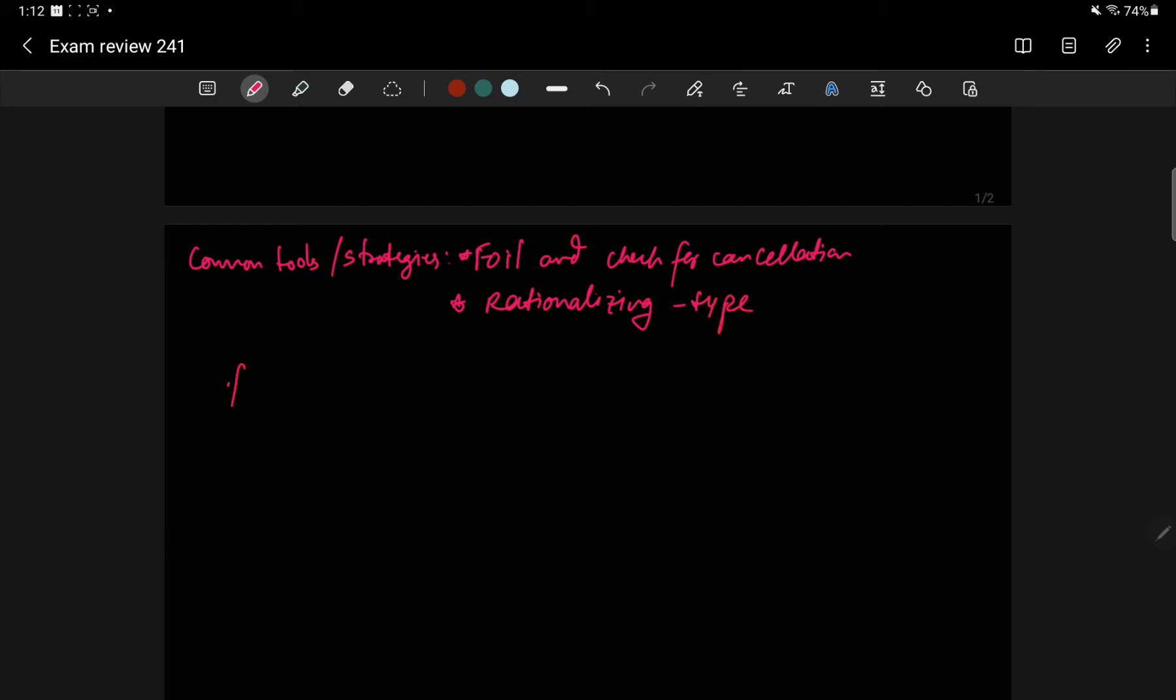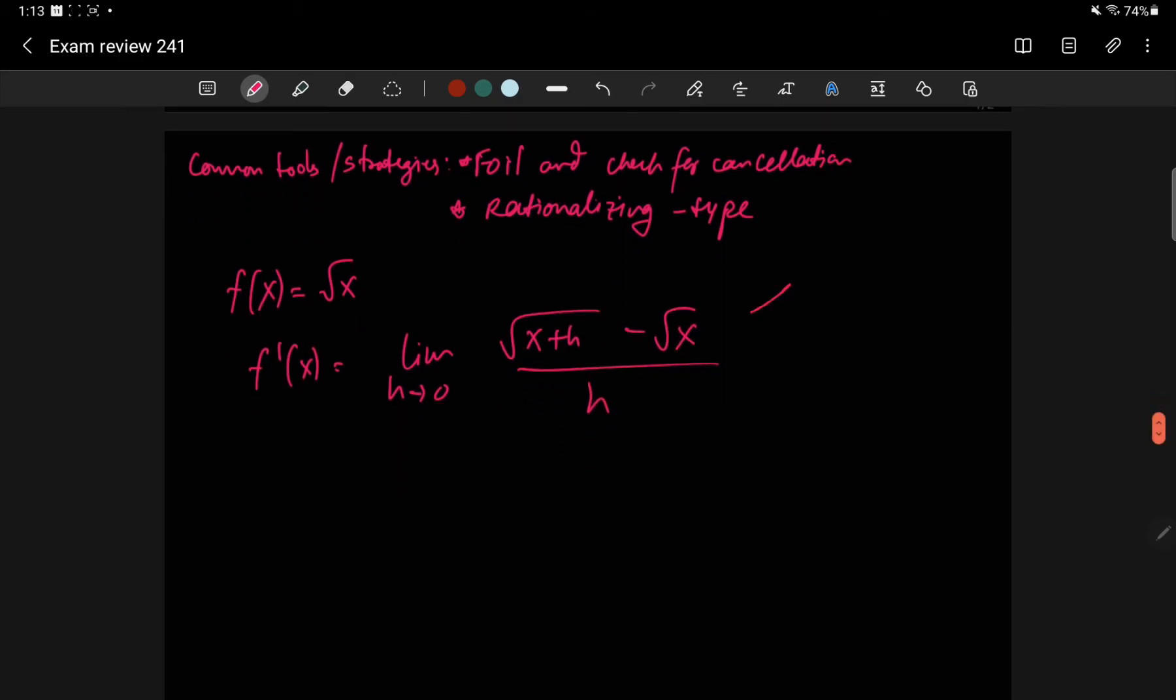One of the examples for that would be root x. If you're trying to find f prime x for root x, that would end up being square root of x plus h minus square root of x over h. The problem here is there is no identity for this. Like with squares, we had an identity. Even with cubes, you can foil them out and cancel a bunch of things and it still works out fine. But for square roots, we don't have any identity. There is no nice way that this can be represented.